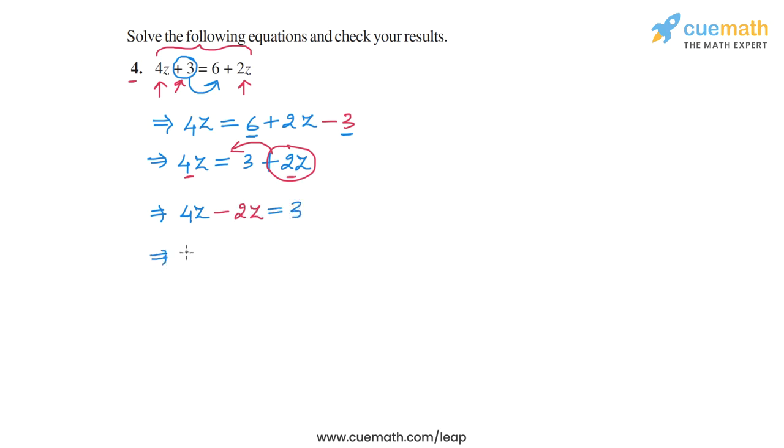So we get 4z minus 2z is 2z on the left hand side. And on the right hand side, we have 3. And finally, we can divide both sides of the equation by 2 to get rid of this coefficient. And that will give us z is equal to 3 divided by 2. So the solution that we get is z is equal to 3 by 2.